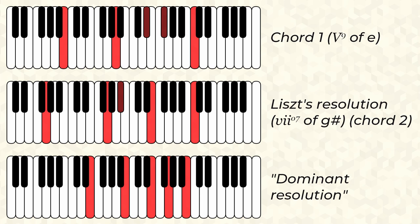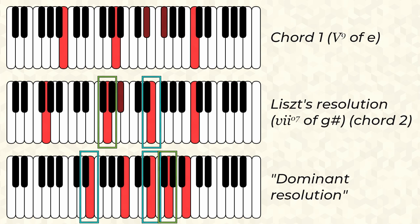Do you see it? If you ignore the note spellings and just look at the piano, two of the notes, E and G slash F double sharp, are present in both resolutions. Not only that, but the C slash B sharp is present in the dominant and Liszt's resolution, and the bottom F double sharp in Liszt's resolution is only a third away from the bottom note of the dominant.